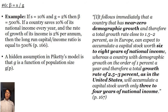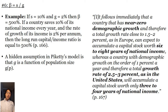Consider the following concrete example: suppose that the savings rate is 10% and g is equal to 2%, then beta will equal 500%. So if a country saves 10% of its national income every year and the rate of growth of its income is 2% per annum — pretty typical of developed societies — then the long-run capital income ratio equals 500%. There is a hidden assumption in Piketty's model: g is actually a function of population size. A country with near-zero demographic growth and a total growth rate close to 1.5% can expect to accumulate a capital stock worth six to eight years of national income, whereas a growth rate of 2.5% as in the United States will accumulate a capital stock worth only three to four years of national income.